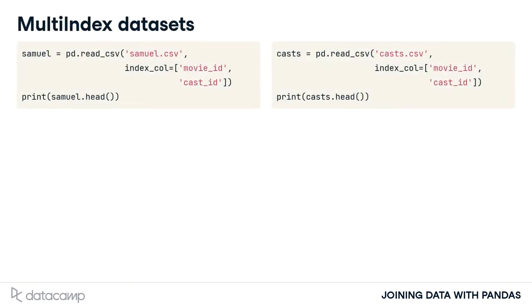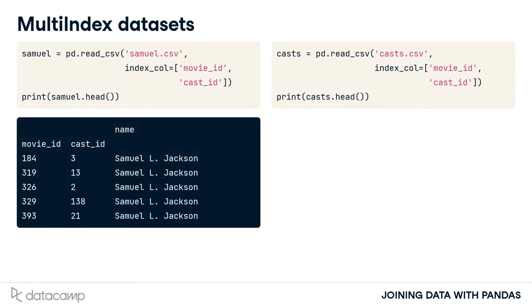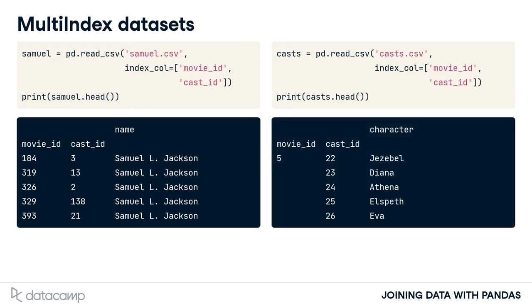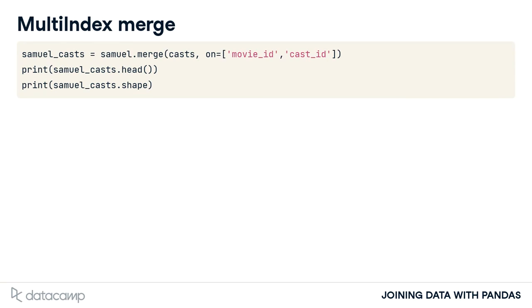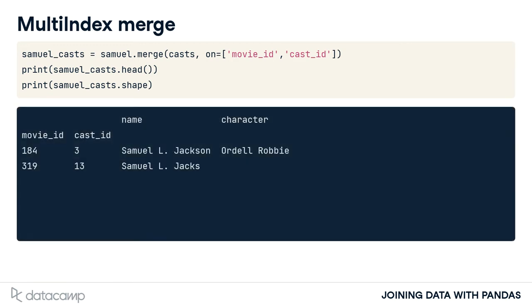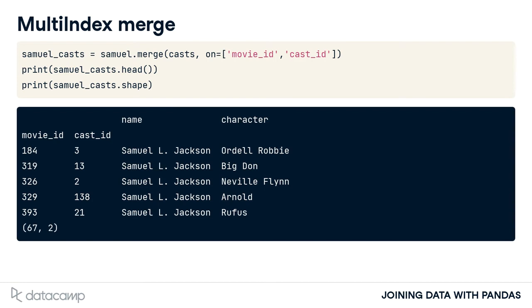Let's try a multi-index merge. Here, we have two tables with a multi-index that holds the movie ID and cast ID. The first table, named Samuel, has the movie and cast ID for a group of movies that Samuel L. Jackson acted in. The second table, named cast, has the movie ID and cast ID for a number of movie characters. Let's merge these two tables on a multi-index. In this merge, we pass in a list of multi-index names to the on argument, just like we did when merging on multiple columns. Since this is an inner join, both the movie ID and cast ID must match in each table to be returned in the result. It is interesting to see that Samuel L. Jackson has acted in over 65 movies. That's a lot.